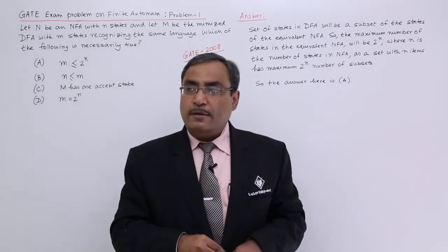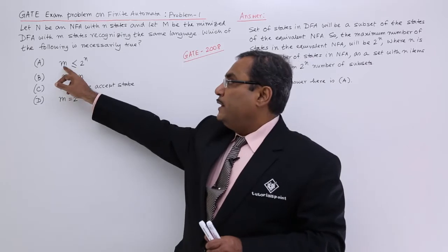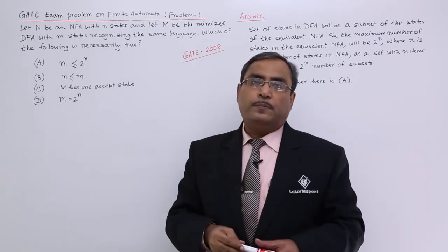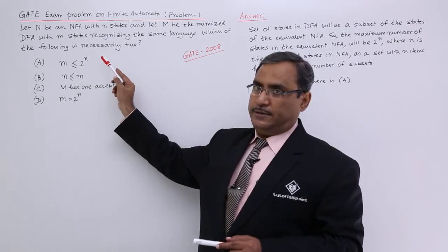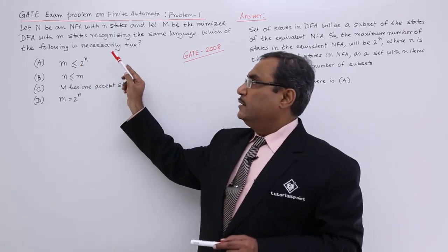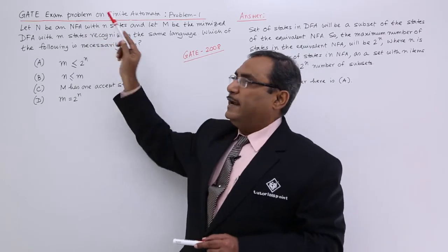The answer here is A because m will be less than or equal to 2 to the power of n. This 2 to the power of n means the number of elements in the subset of the states that is the n number of states of the NFA.